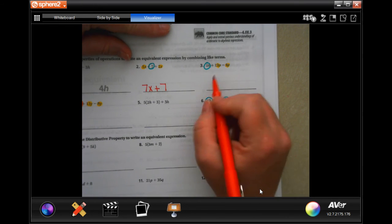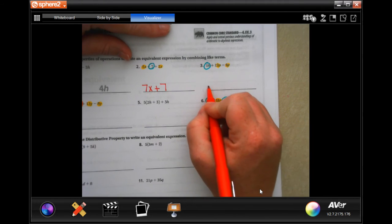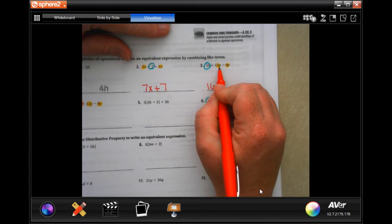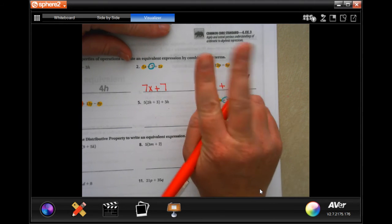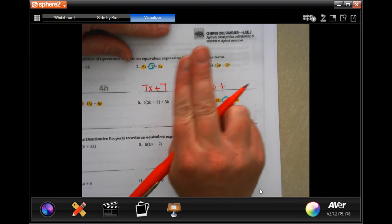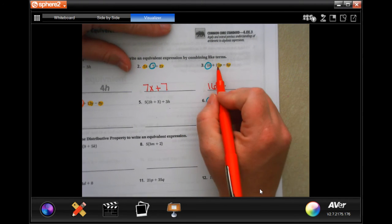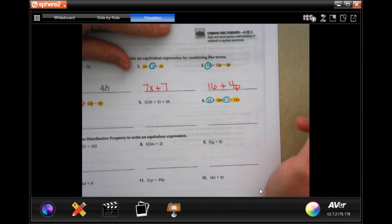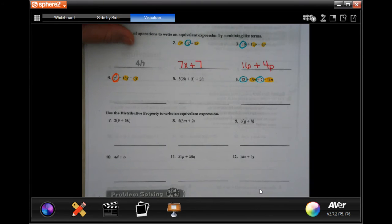So now we have 16 plus 13p and 9p are both like terms because they both have a p. So now we just need to do 13 minus 9 is 4 and keep the p. Not so bad.